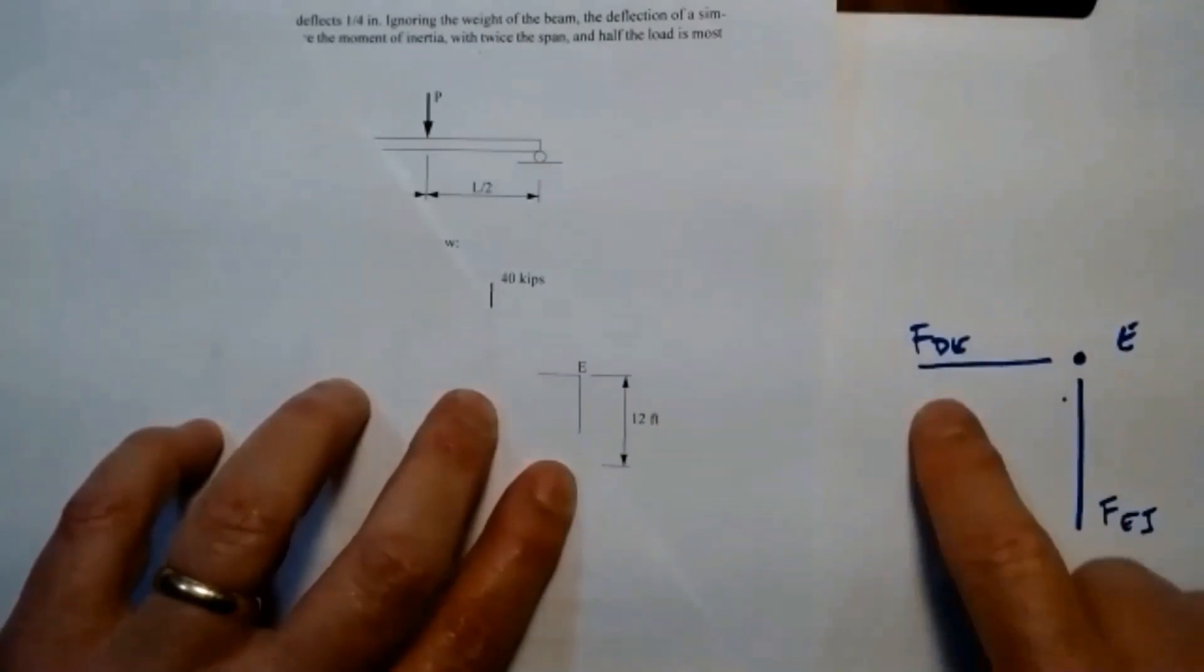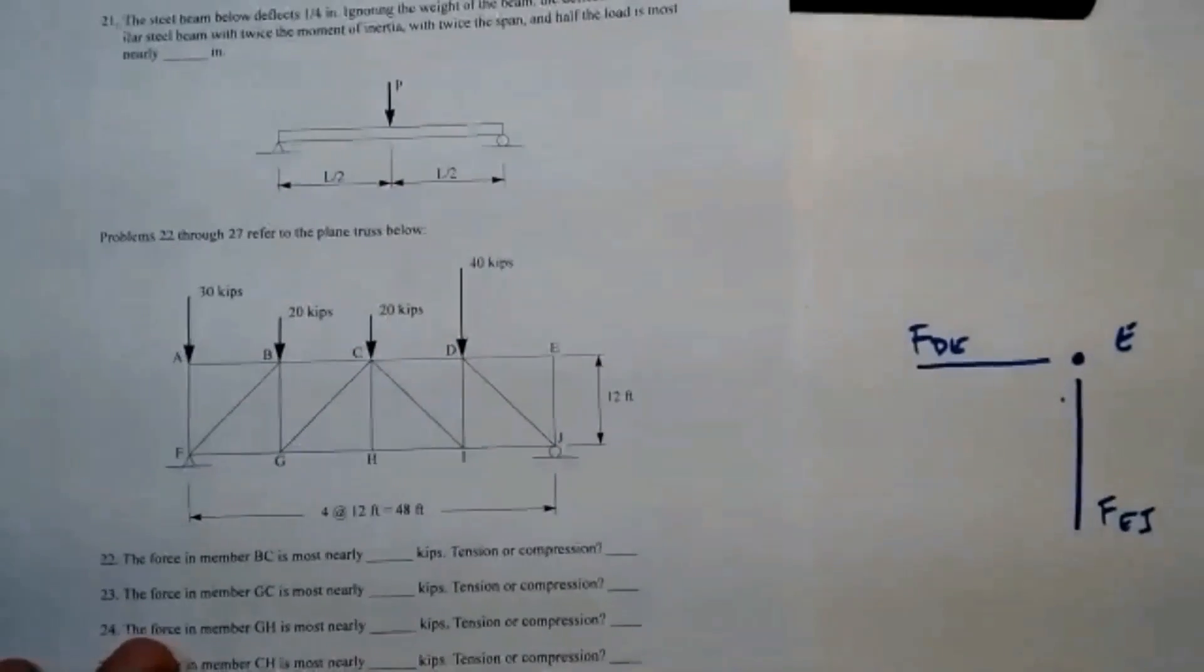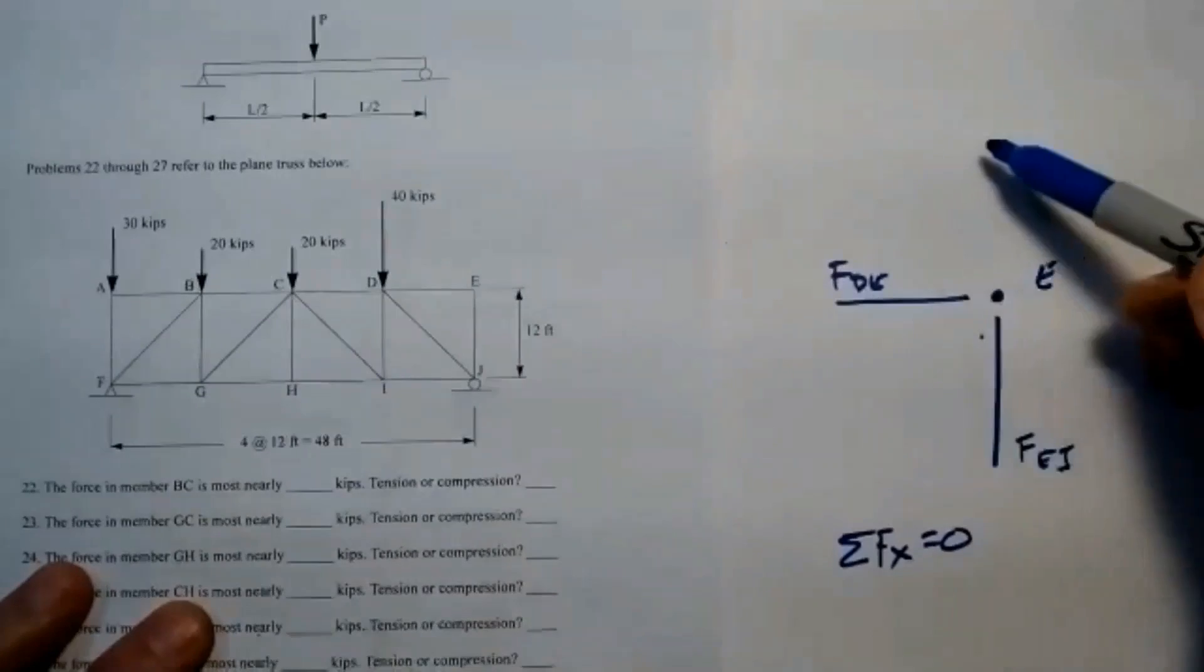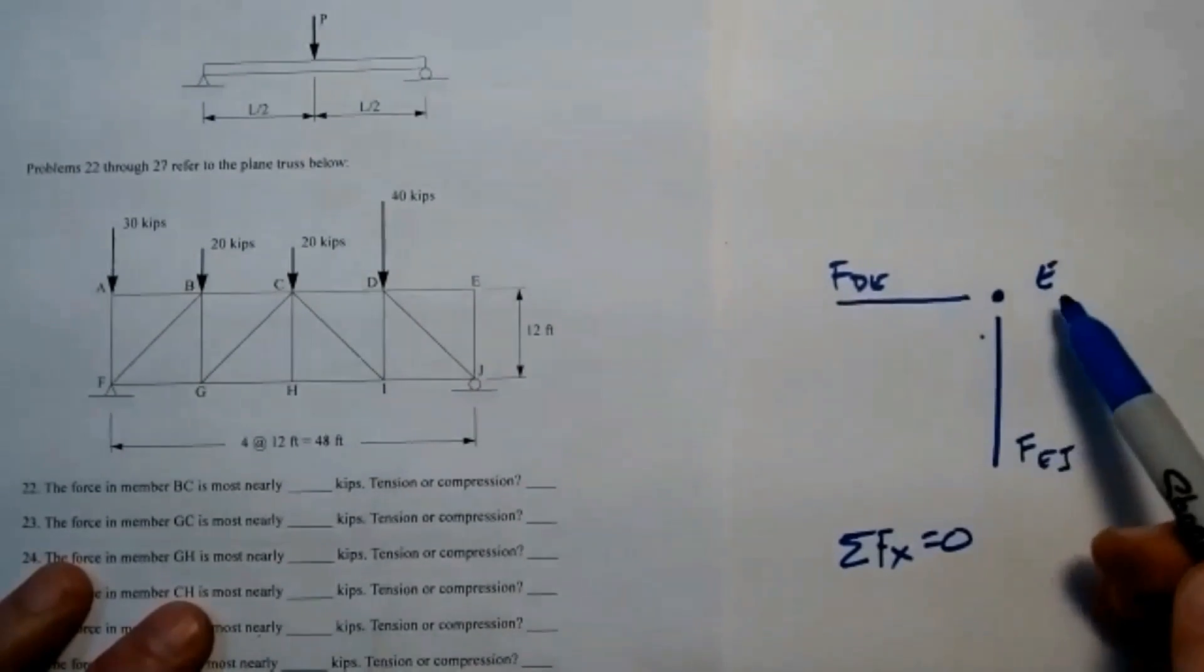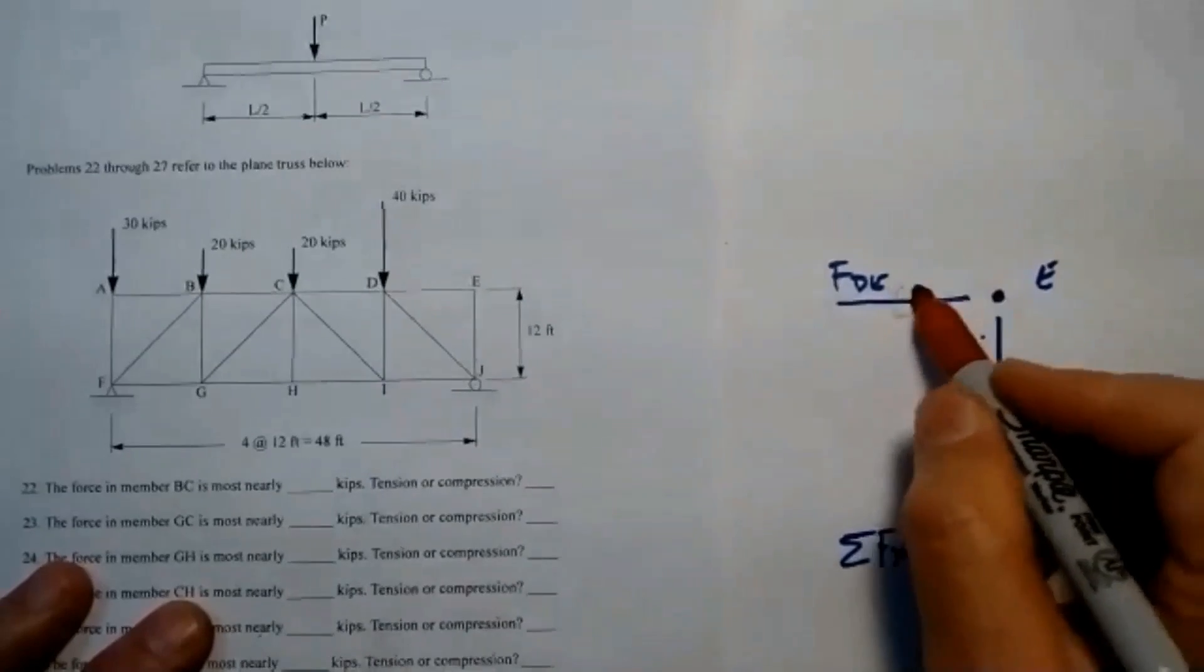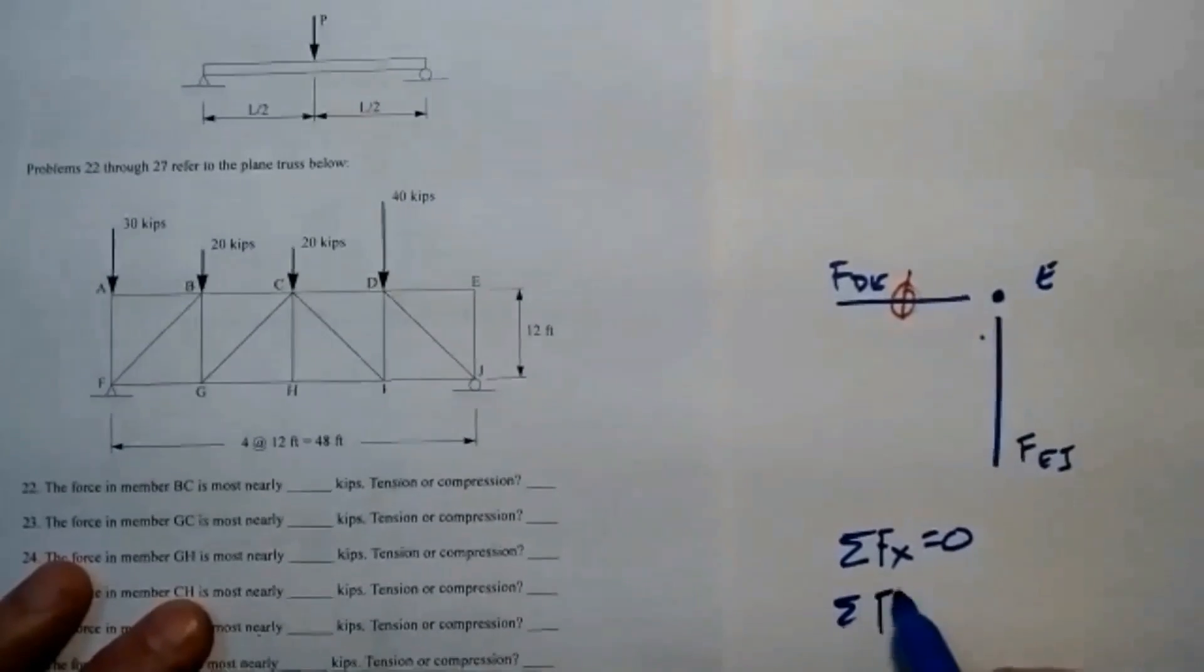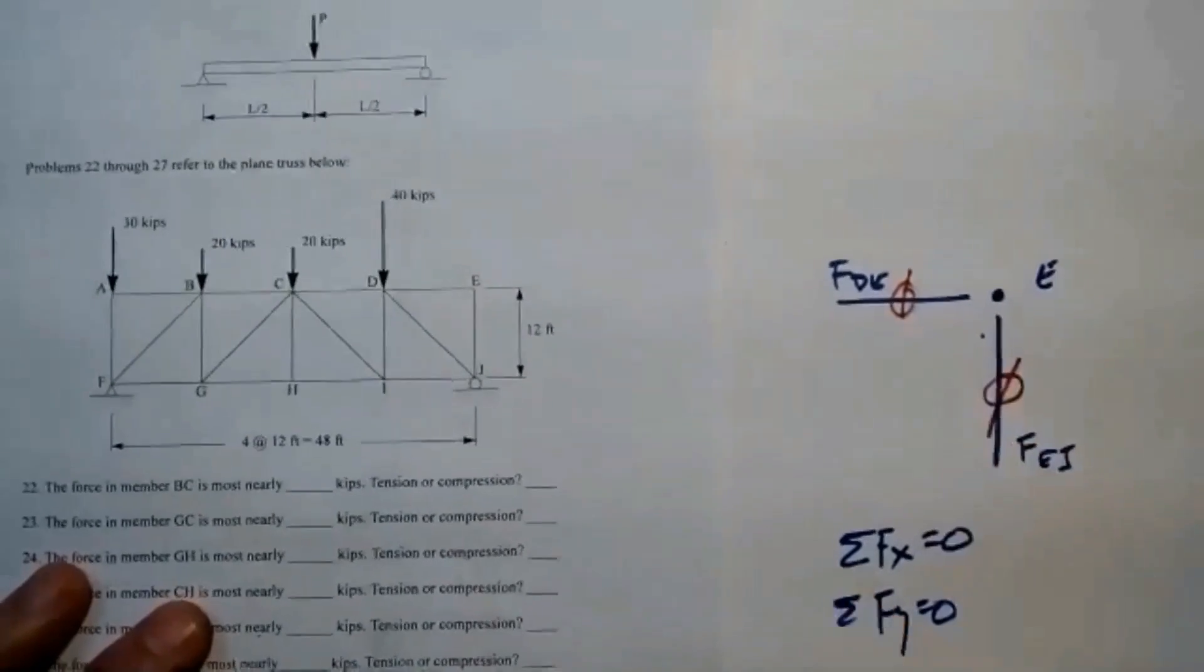There are no applied loads at this joint for me to reflect. So now if I sum forces in the X, I know they have to equal zero. Well there are no applied forces in the X and the only thing that could provide resistance in the X would be FDE. Well that means that's a zero force member and if I sum forces in the Y there are no applied loads here at E,